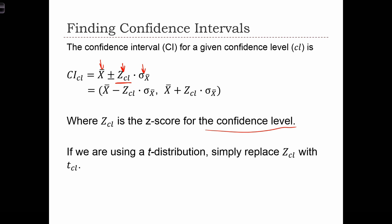If our sampling distribution is not normally distributed, if it's t-distributed, then instead of using z-scores, we're going to use t-scores.